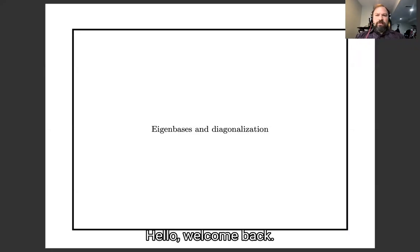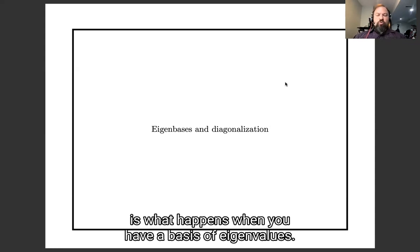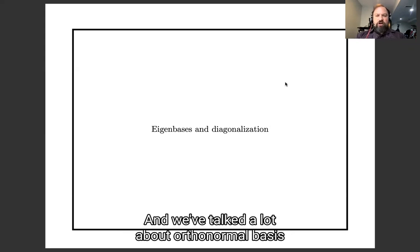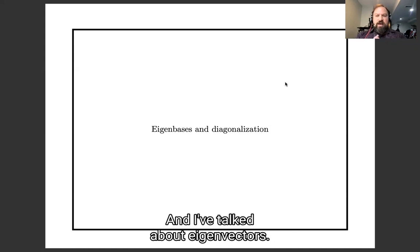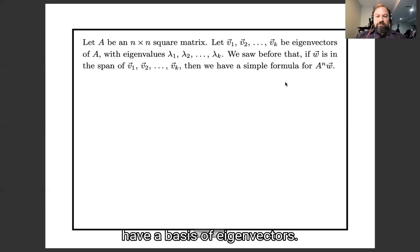Hello, welcome back. The topic of this lecture, and of the next several lectures after it, is what happens when you have a basis of eigenvalues. We've seen that bases are collections of vectors which are very good for computing in, and we've talked a lot about orthonormal bases and their advantages, and we've talked about eigenvectors, and now we're going to talk about what happens when you have a basis of eigenvectors.